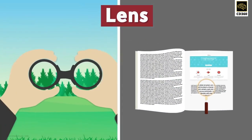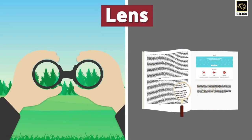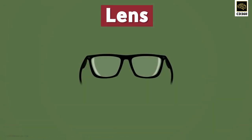The two lenses in binoculars make objects appear nearer to us. We use a magnifying lens to see tiny things, and it has a lens in it. There are two kinds of lenses used in spectacles.